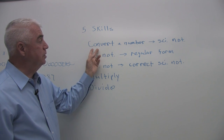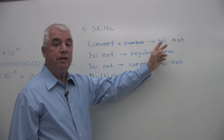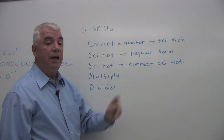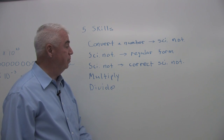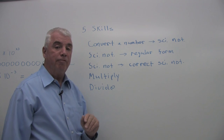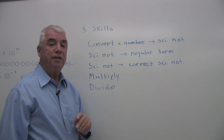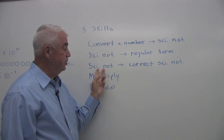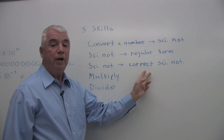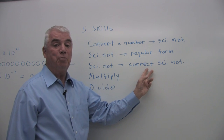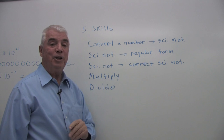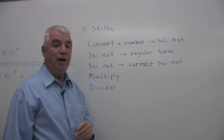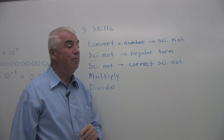I think I could list five skills we'd like you to have in scientific notation. It's important to be able to convert a number into scientific notation, and the reverse — taking one in scientific notation and converting it back to regular form. Sometimes when multiplying and dividing numbers in scientific notation you end up with a result that's not in correct scientific notation — the decimal isn't after the first digit. So we'd like you to have that skill, and also to be able to multiply and divide numbers in scientific notation.